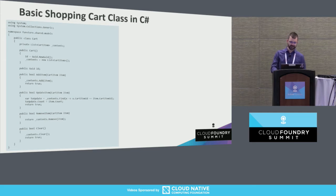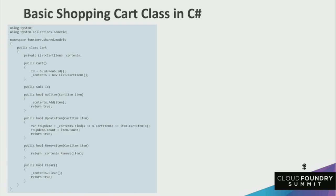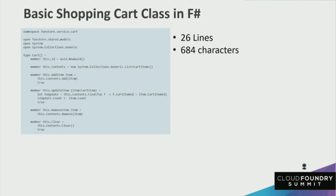This is a basic shopping cart class in C#. It all fits on the screen; it doesn't do anything fancy, but it looks pretty typical of a small class in C#. You can see it's got 42 lines and 900 characters — there's nothing real exciting here. Next up is this code in F#, which we can walk through together. You can see immediately that it's a lot more compact. We can trim a lot of white space which doesn't serve any real purpose. If you're familiar with Python, it's similar — the white space is important, and that's how we get in and out of functions.